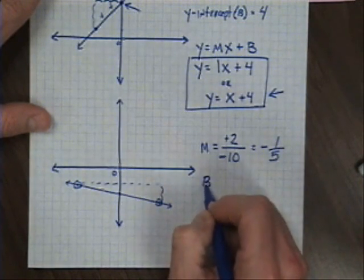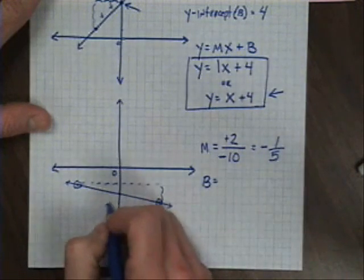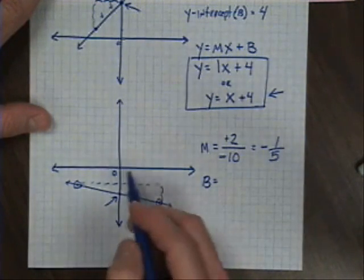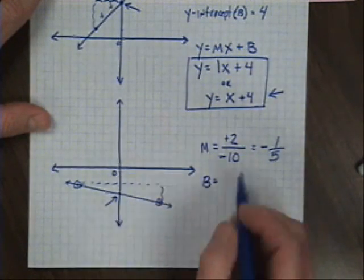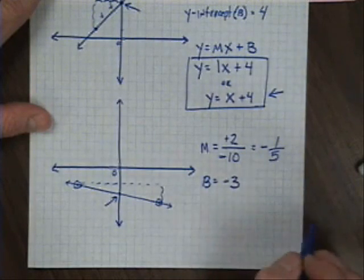As for my y-intercept, my b, it touches right here. I can see that. So I simply count down one, two, three spaces, and it's negative three on the y-axis.